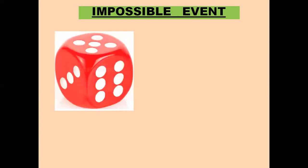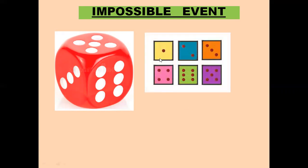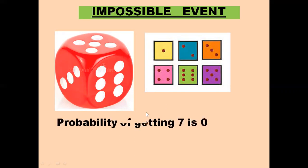Now we come to another example of an impossible event. When a die is rolled, we can have six numbers — we know there are six numbers on the dice from one to six: one, two, three, four, five, and six. But do we have the number seven on the dice? No. Probability of getting seven is zero, because we will never get seven when the die is rolled. So in an impossible event, the occurrence of the event is zero percent, because the event will never take place.